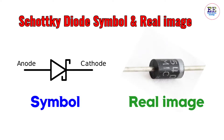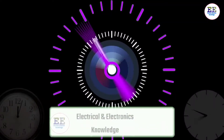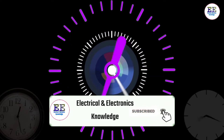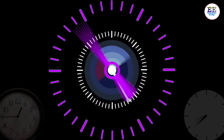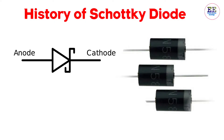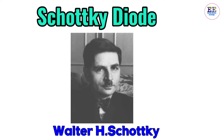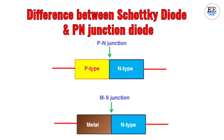In this picture, the silver band side is the cathode terminal and the other side is the anode terminal. Do you know who discovered the Schottky diode? The Schottky diode is named after German physicist Walter H. Schottky, who discovered it.